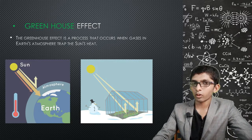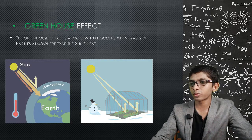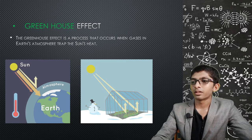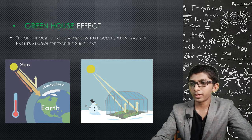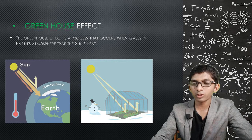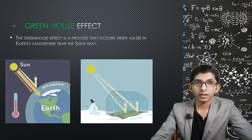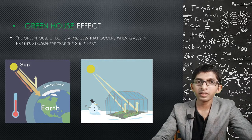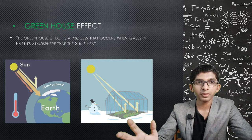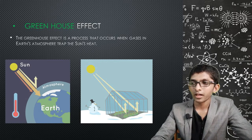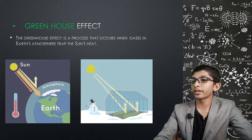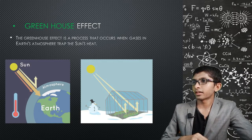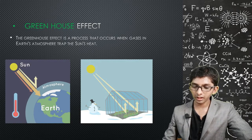Greenhouse gases act like the glass of a greenhouse. Sunlight passes through the glass, and the heat is trapped inside. Similarly, sunlight enters the atmosphere and the heat cannot escape, causing the greenhouse effect.